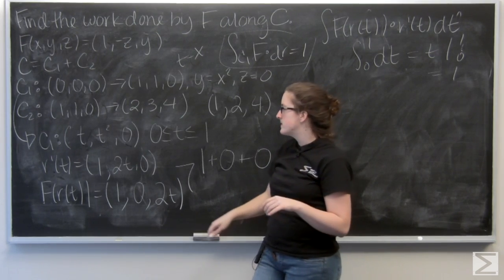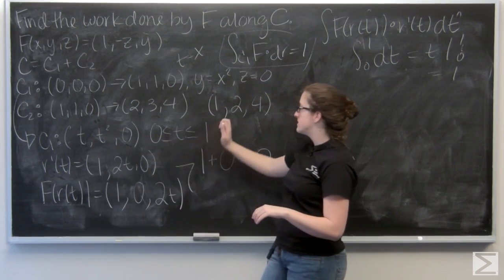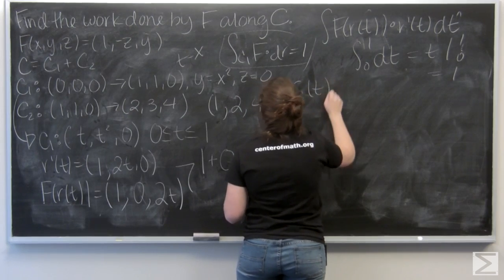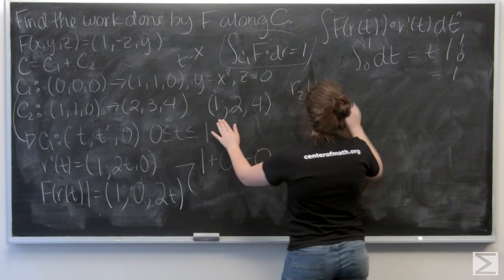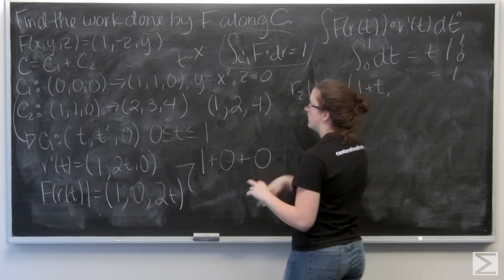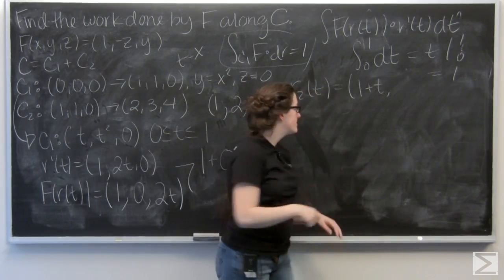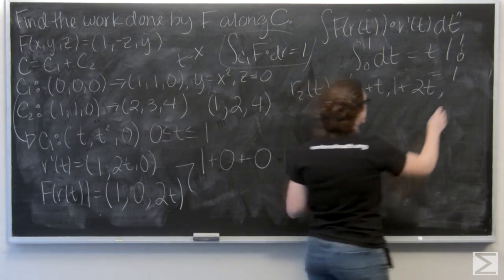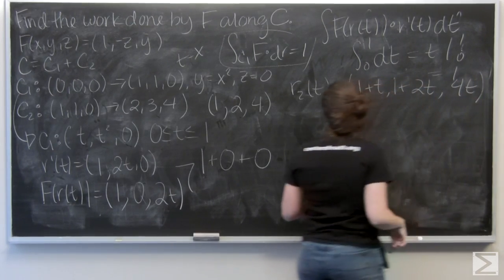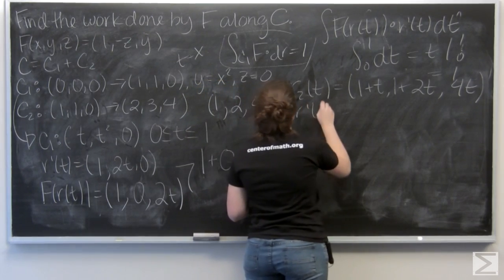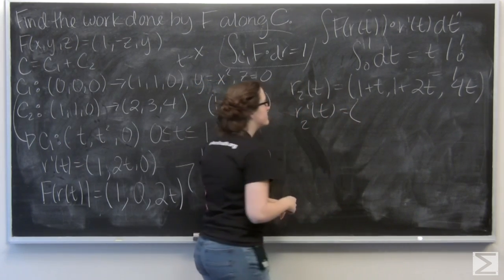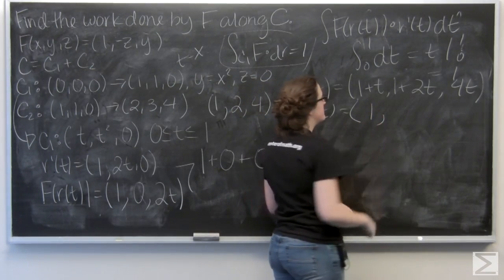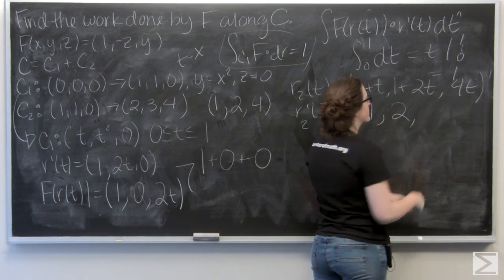So, to parameterize c2, I can have the start position plus this difference times t. So, I have (1+t, 1+2t, 4t). Now, let's go ahead and find r prime. So, just take the derivative of each term with respect to t. 1 is a constant, the derivative of t is 1. Similarly here, the derivative is going to be 2, and then 4. So, that was pretty easy.